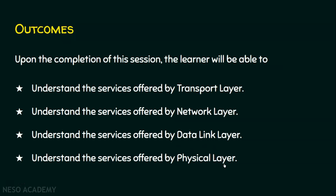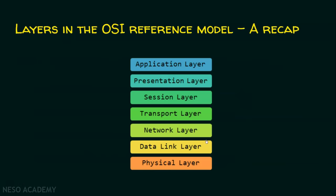We will now have a quick recap on the OSI reference layers and the services offered by application, presentation, and session layers. We have basically seven layers in the OSI reference model: application layer, presentation layer, session layer, transport layer, network layer, data link layer, and physical layer. We have already seen application, presentation, and session layers — we will run through these three layers quickly.